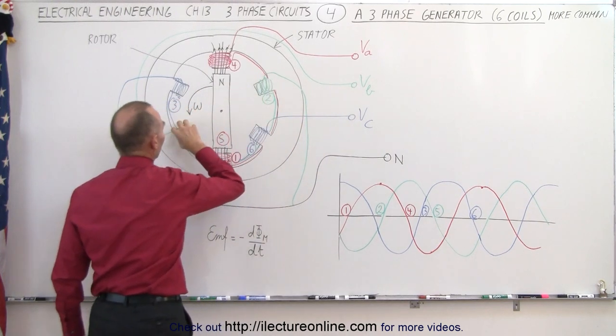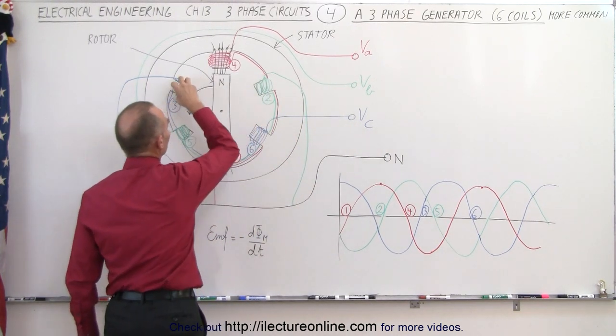We have V sub B, which has a coil here and a coil here, and V sub C, which has a coil here and a coil here.